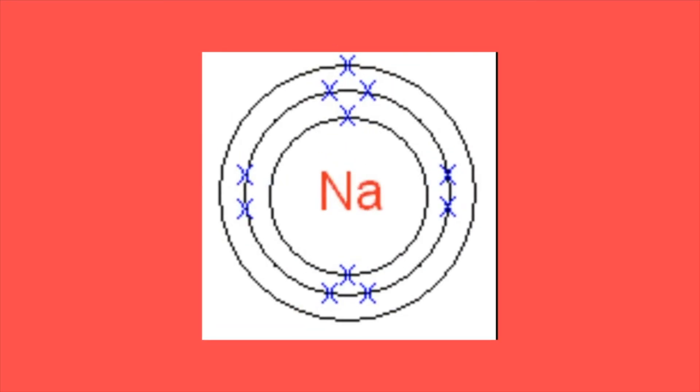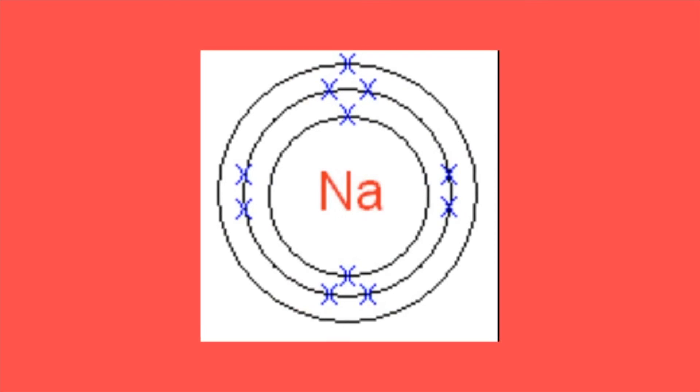There are two electrons in the first shell, eight electrons in the second shell, and one electron in its outermost shell.